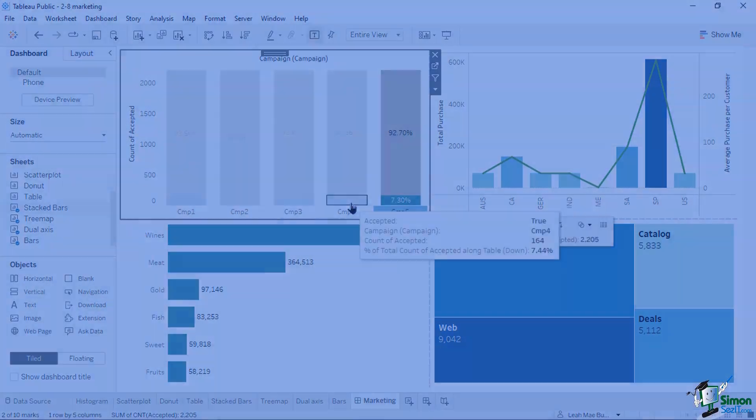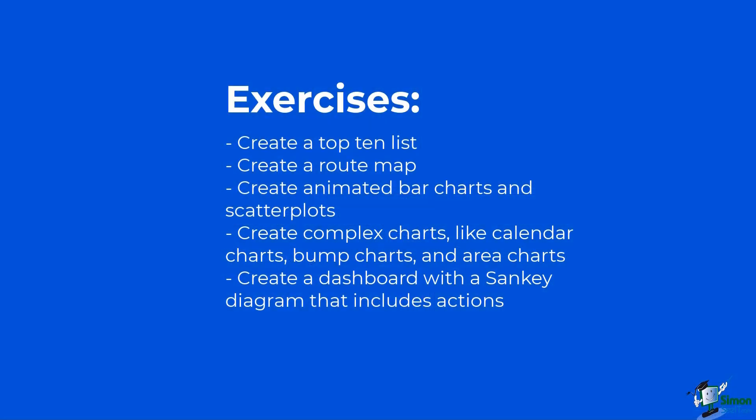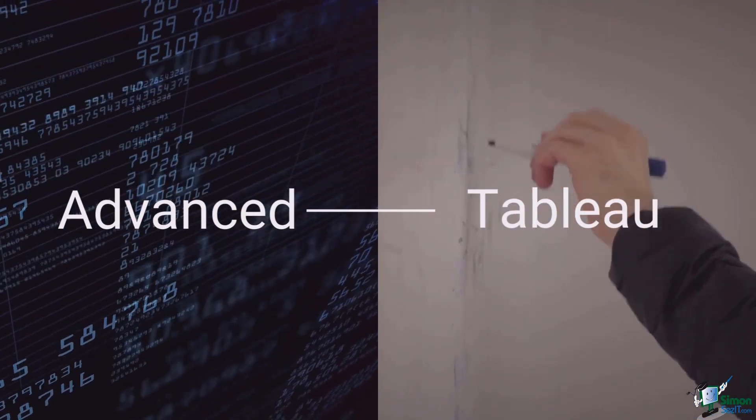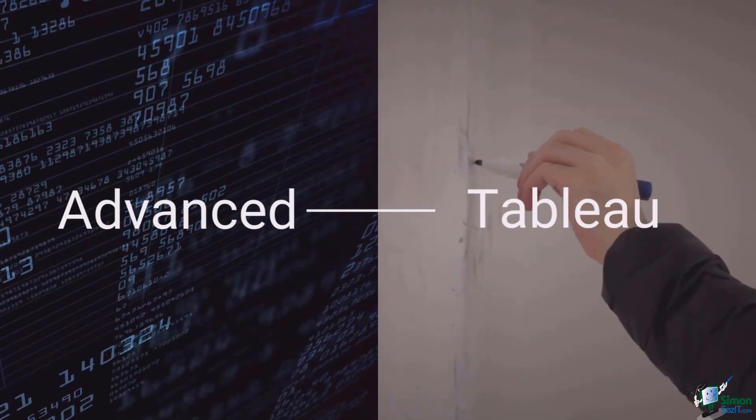In the last section, there are five exercises covering everything from building dashboards with animated visualization and LOD expressions, as well as exercises that include building circular calendar charts, bump charts, and area charts, as well as the final exercise five, in which you have to build a sankey diagram that will highlight actions. Welcome to the course, and I'll see you in the first session.